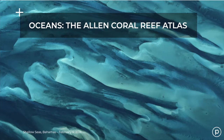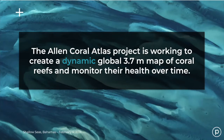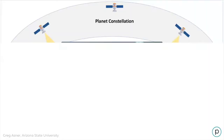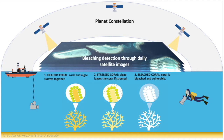We'll start with the oceans through a project called the Allen Coral Atlas, which is working to create a dynamic global map at 3.7-meter resolution of coral reefs to monitor their health over time. Coral reefs are being impacted by rising sea temperatures from climate change — they are extremely vulnerable and a very important part of our planet's ecosystem. Because they are changing rapidly, you cannot have a static map. In order to completely understand the processes affecting coral growth and die-off, we need dynamic maps, and this is what the Allen Coral Atlas is trying to tackle.